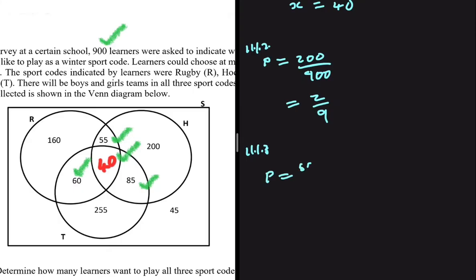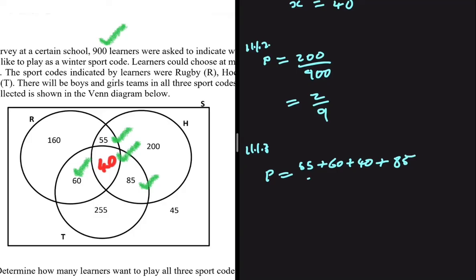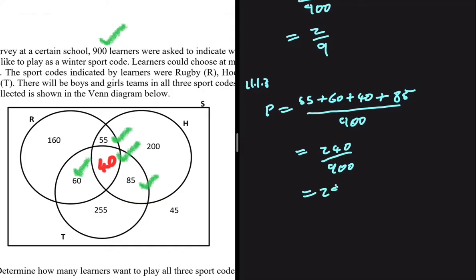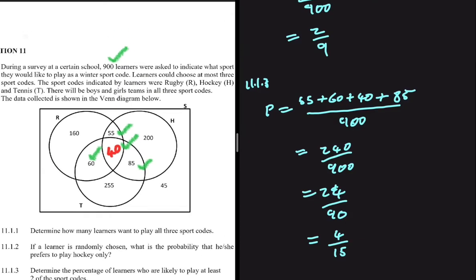The probability equals (55 + 60 + 40 + 85) divided by 900. That gives 240/900, which simplifies to 24/90, and further to 4/15. That is the answer to 11.1.3.